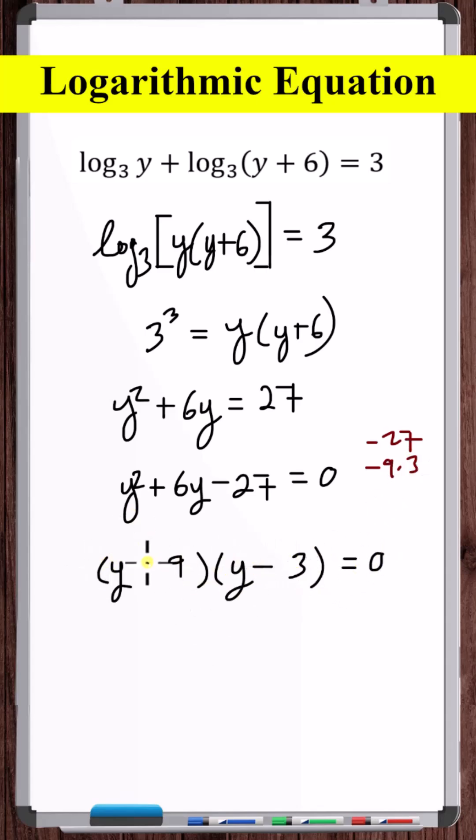So we've got minus 3 and positive 9. So y is equal to minus 9 and y is equal to 3. But we need to plug these potential solutions back into the original equation to see if they work.